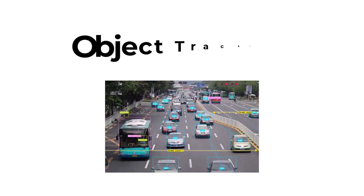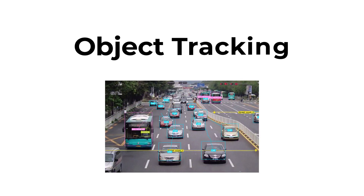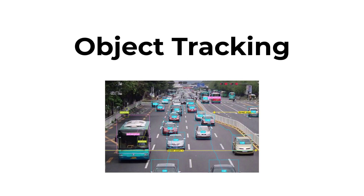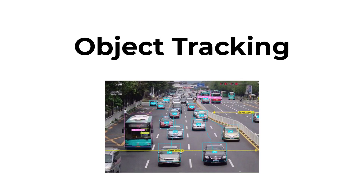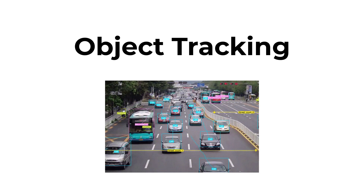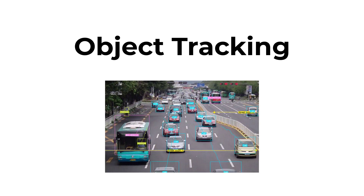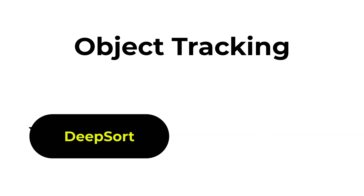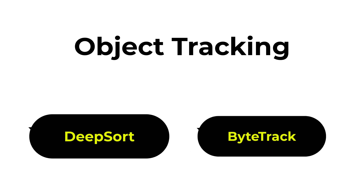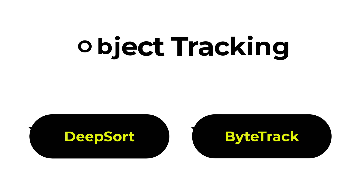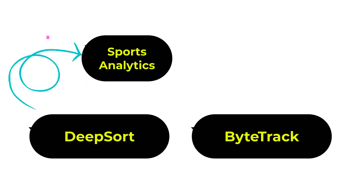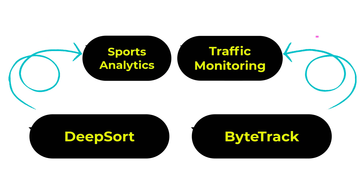The next topic is object tracking — following moving objects across frames in real-time. To do this, you can utilize algorithms like DeepSORT and ByteTrack. You can also leverage these models for sports analytics and traffic monitoring.